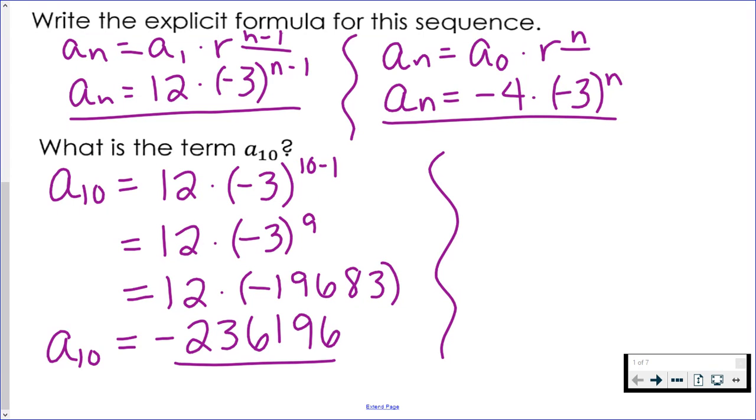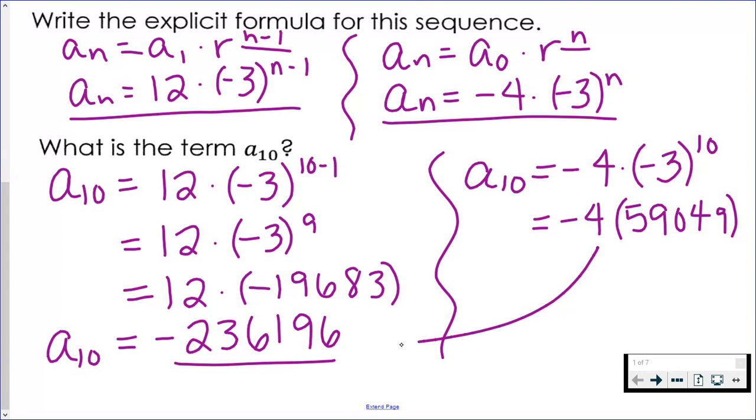You could also use the other version of the explicit formula using our zero term instead of term one. So again, I want the tenth term, which means n is 10. So this time we have negative three to the tenth power multiplied by negative four in the front. So negative three to the tenth is done first before we multiply by negative four. And you will see that it's the same thing we got the first time we did it.